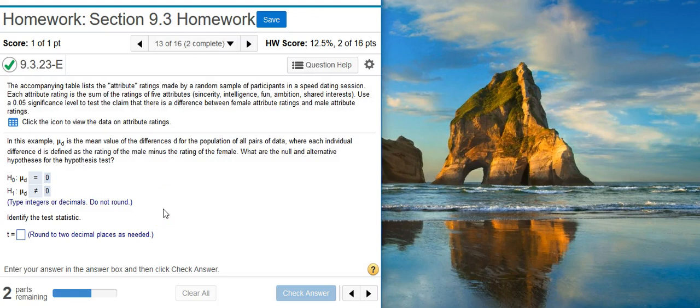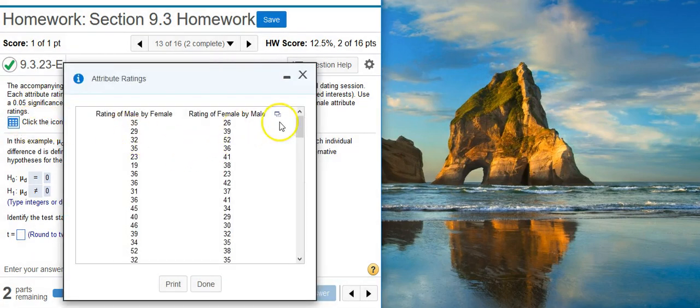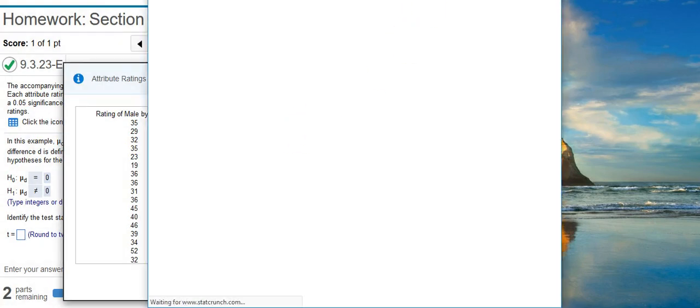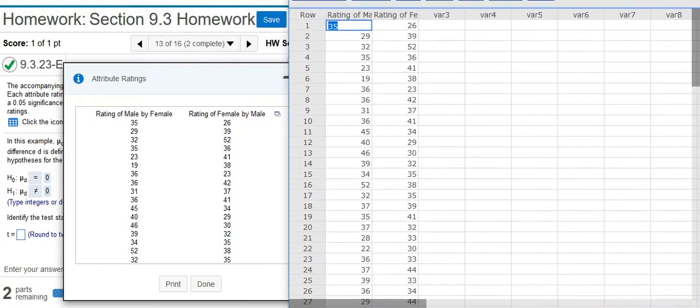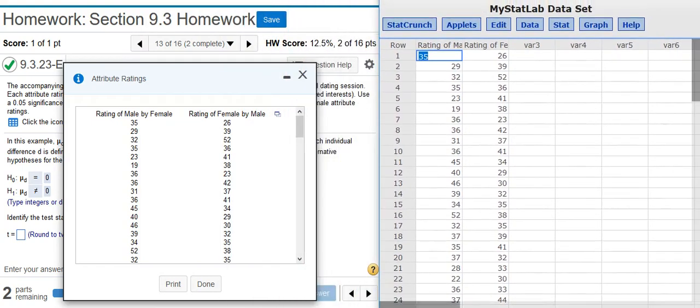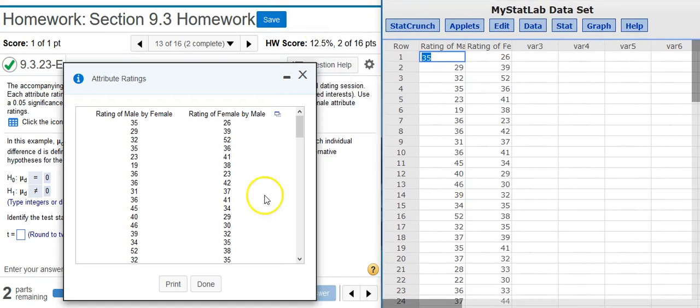The next part asks to identify the test statistic. To do this, I'm going to let StatCrunch do the heavy lifting for me. So here's my data. Click on this icon so I can dump the data into StatCrunch. Now my data is in StatCrunch. I'm going to resize this window so we can see more of what's going on.